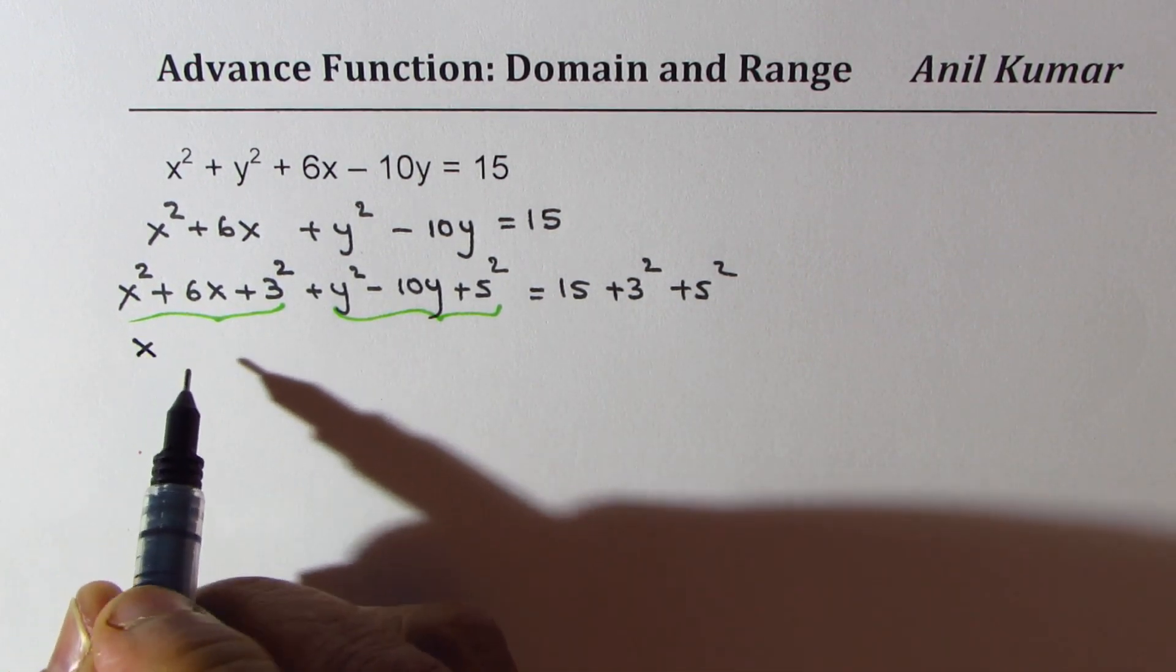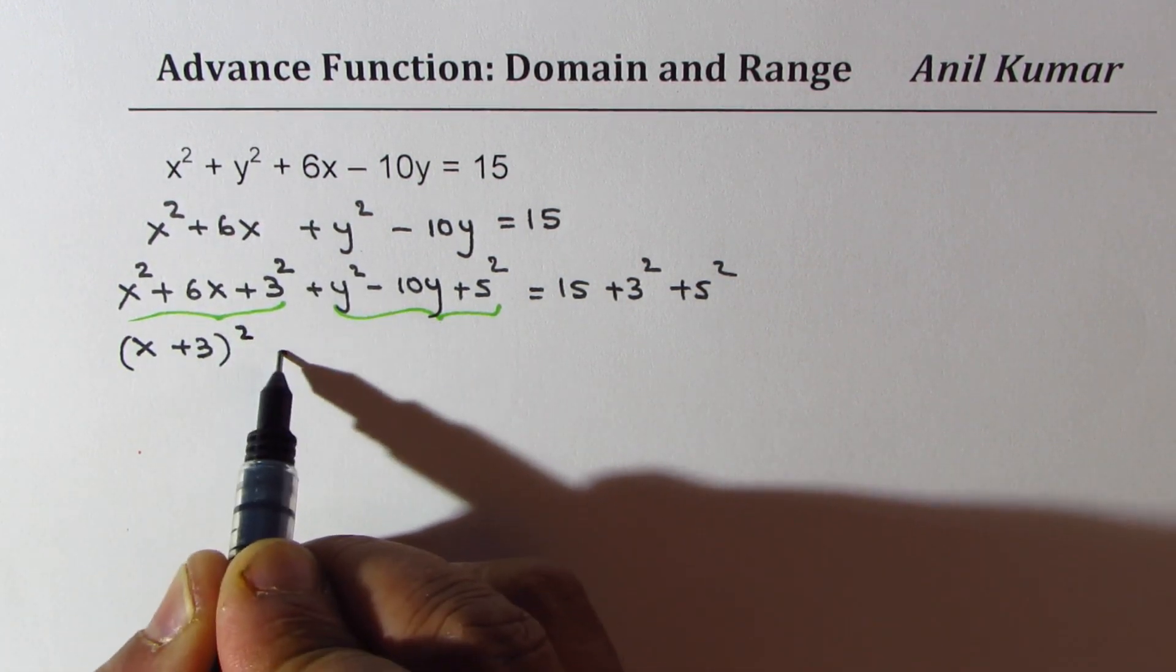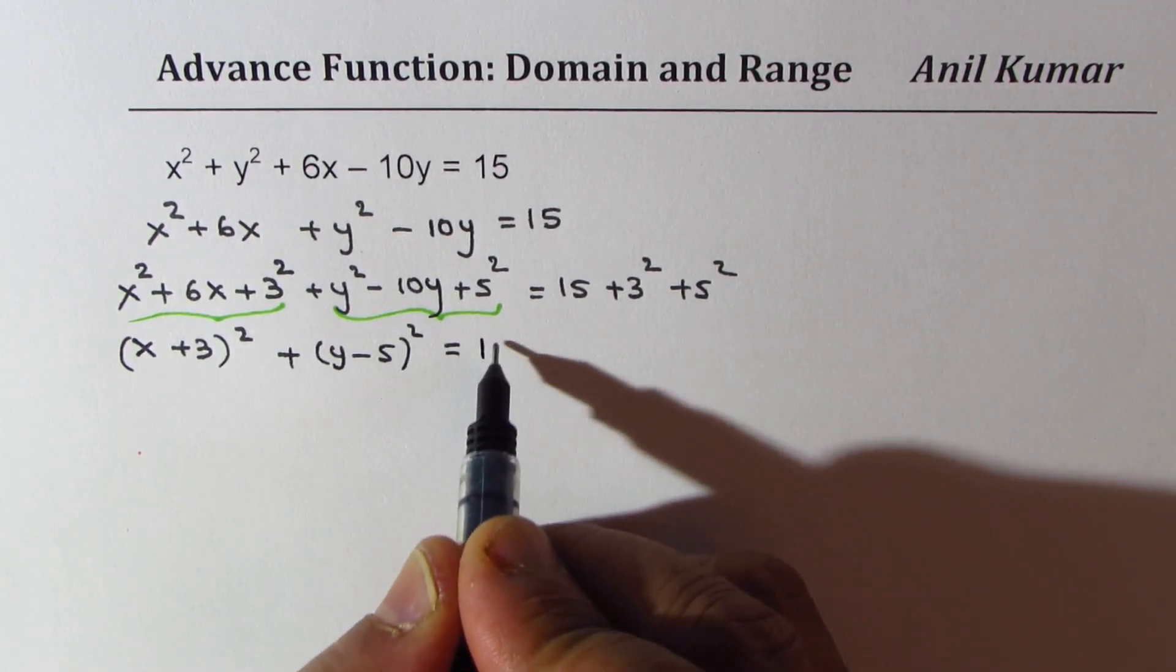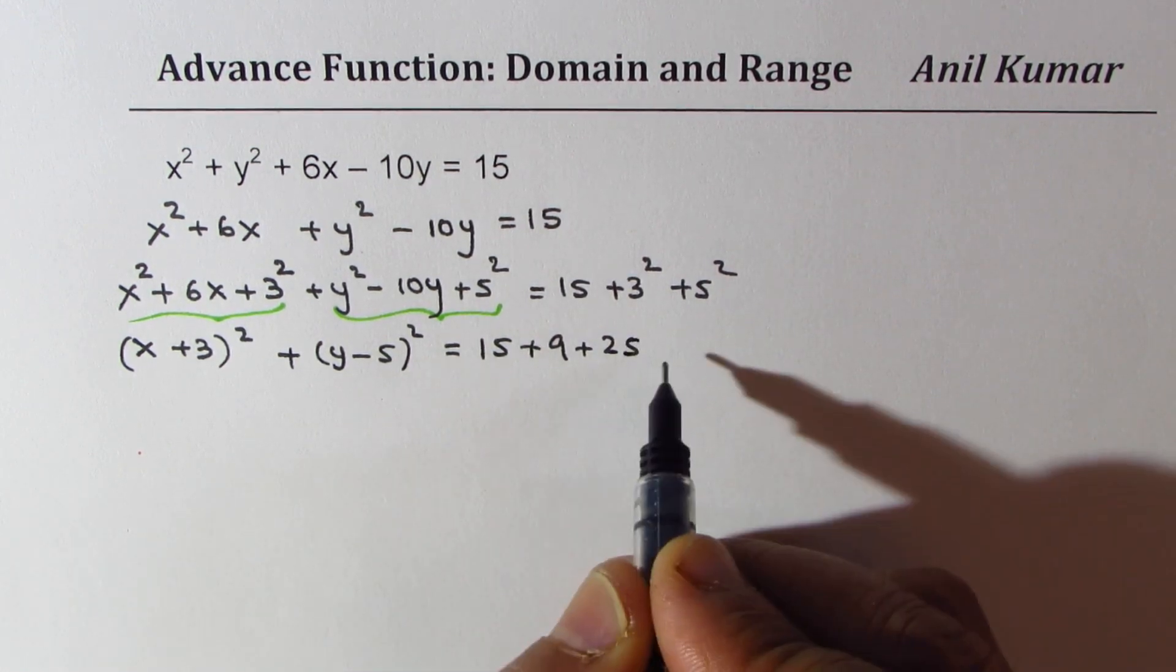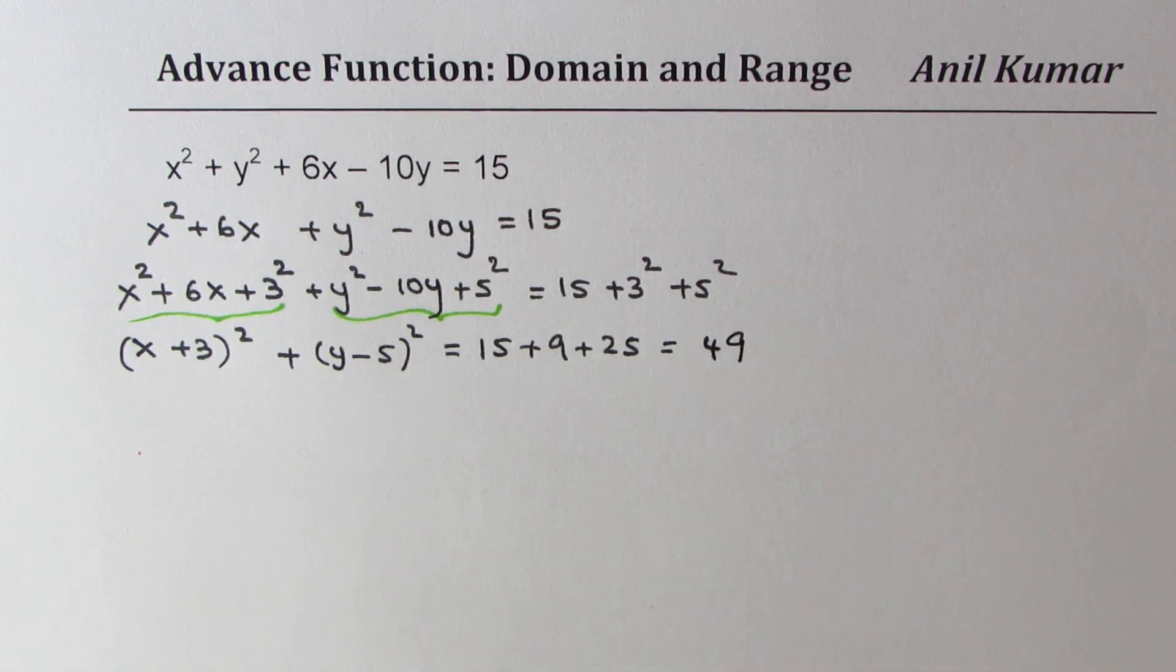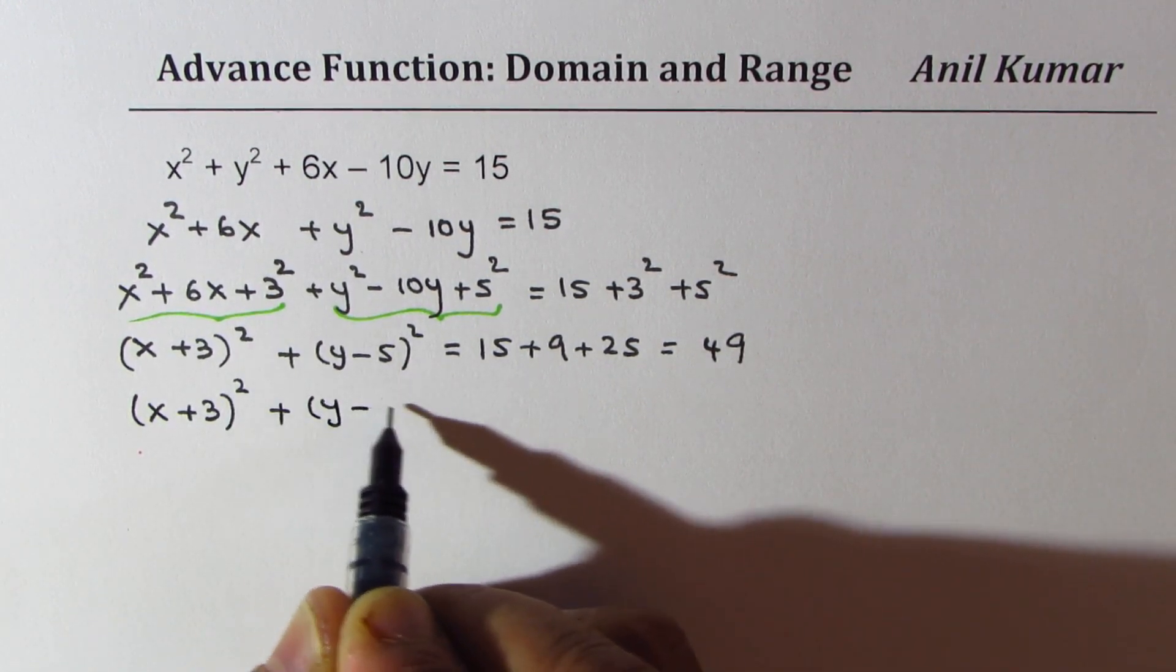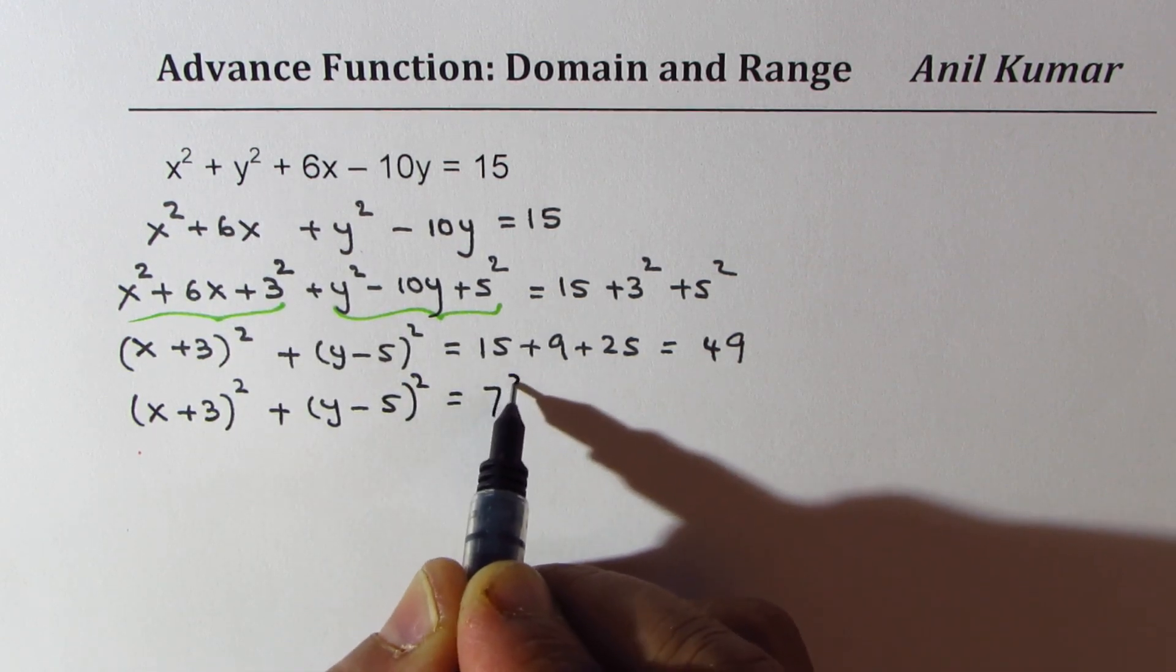x we can write plus 3 whole square and for this we could write y minus 5 whole square equals to 15 plus 9 plus 25 which is 49. So I could write this as x plus 3 whole square plus y minus 5 whole square equals to 7 square.